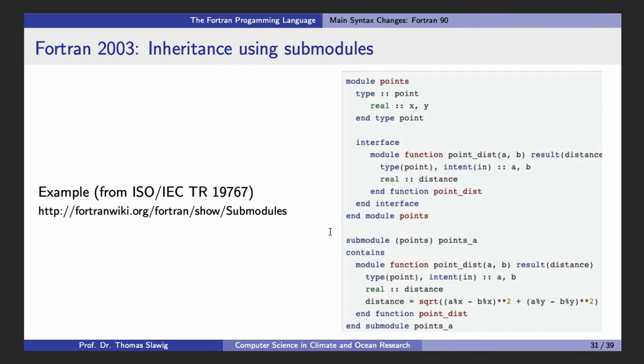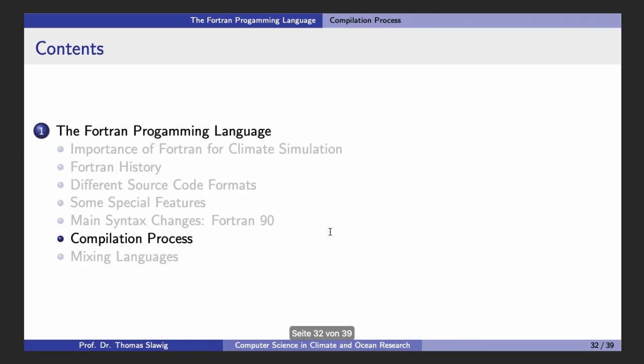These are features that are usually not used in climate models. This is just an example. What I want to mention here is just that now FORTRAN is a modern language where you have all these object-oriented features.